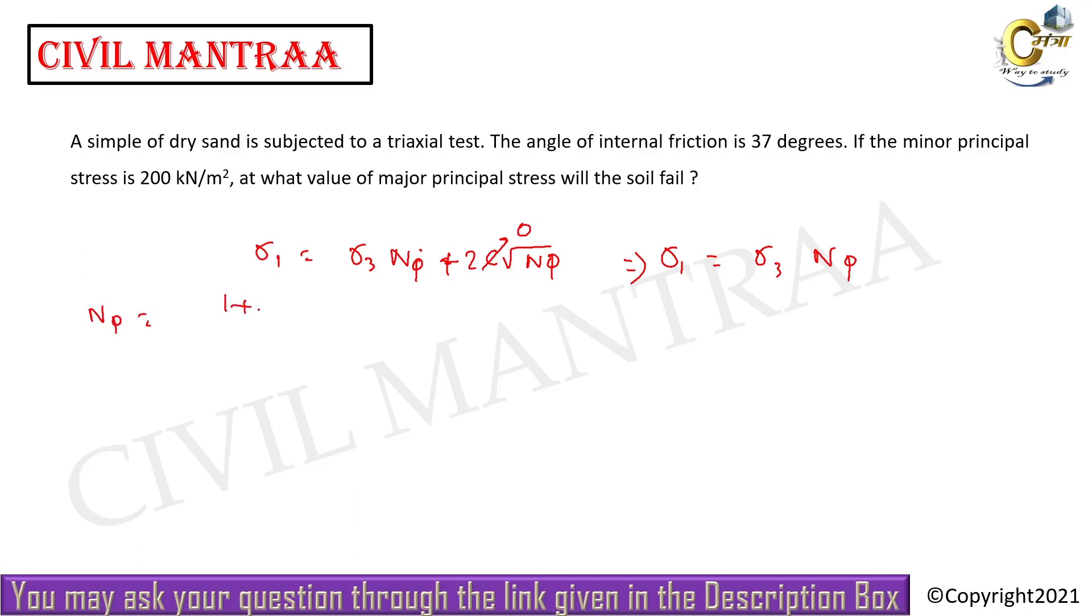Nφ = (1 + sin 37°)/(1 - sin 37°). You can also write this as tan²(45° + φ/2), which equals (1 + sin φ)/(1 - sin φ) = tan²(45° + φ/2). This gives Nφ = 4.03.